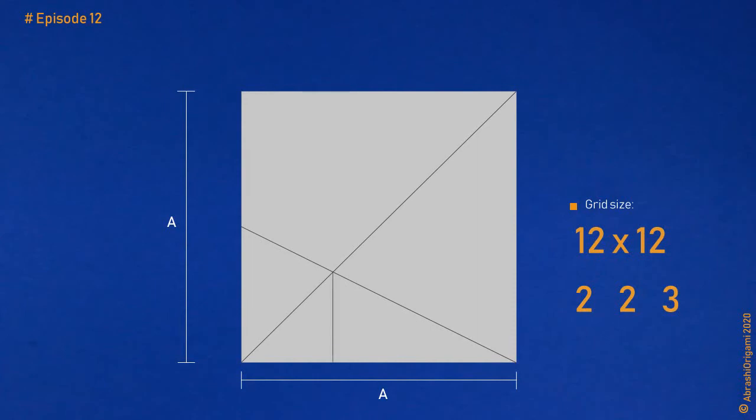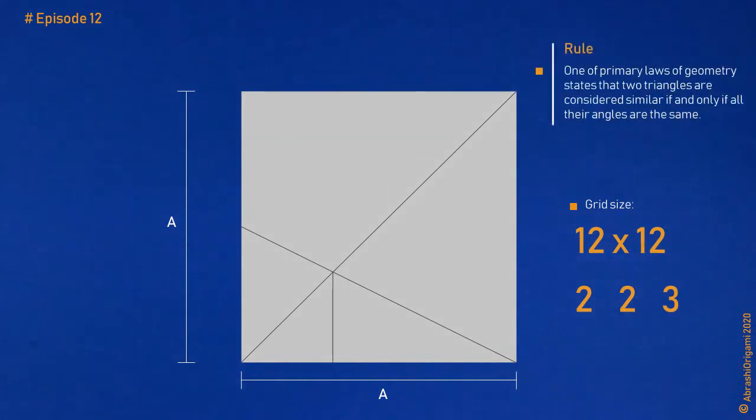First, even though you've learned this in primary school, let me remind you that one of primary laws of geometry states that two triangles are considered similar if and only if all their angles are the same. I repeat. The angles are the same, not the sides or edges. Okay? Now, if we look at our drawing, we can see that there are two such triangles, triangles that are similar. Can you see them? Take a good look. The first one is that which has side lengths B and C. This is the red one. The second one is the one having side lengths A and half of an A. This is the blue one. Okay? I hope you can follow.